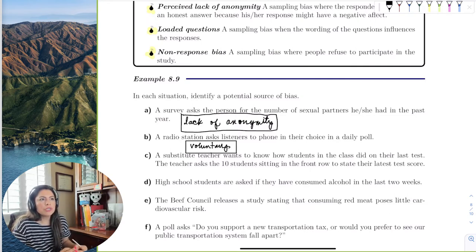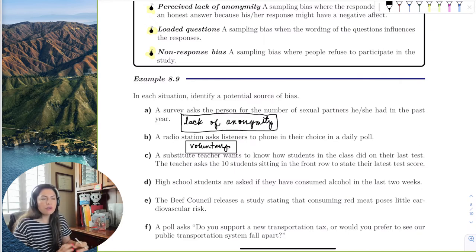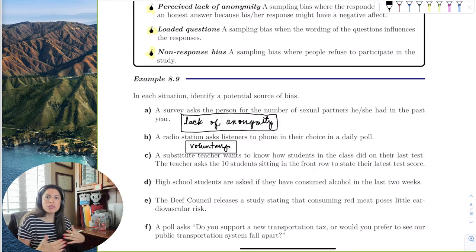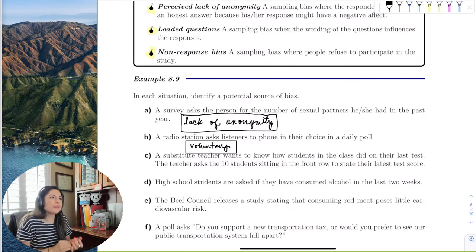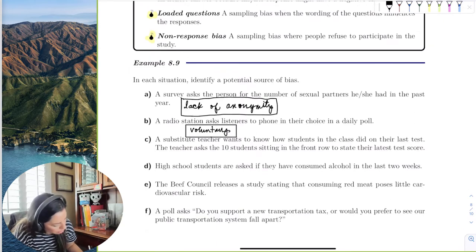A substitute teacher wants to know how students in the class did on their last test. The teacher asks the 10 students sitting in the front row to state their latest test score. If you have a whole class of 40, are the students in the front row a good representation of the entire class? No. We definitely have some bias there. This would be sampling bias.